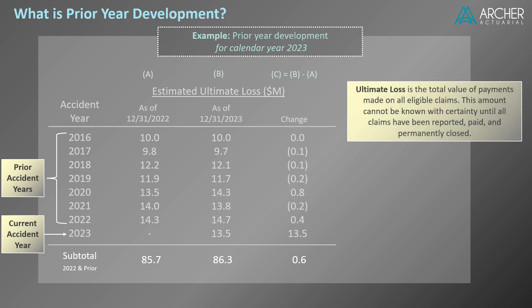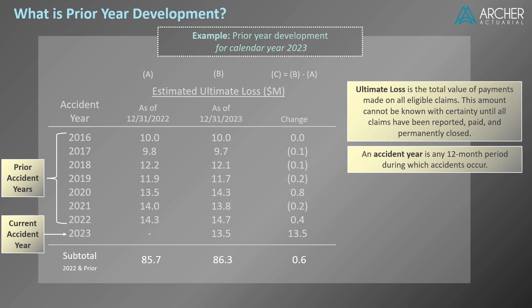Ultimate loss is the total value of payments made on all eligible claims. This amount cannot be known with certainty until all claims have been reported, paid, and permanently closed, and this can take years, even decades, before the ultimate value of losses are known with certainty. Before that time, estimates of ultimate loss are necessary. These estimates are often performed by accident year. An accident year is any 12-month period during which accidents occur.